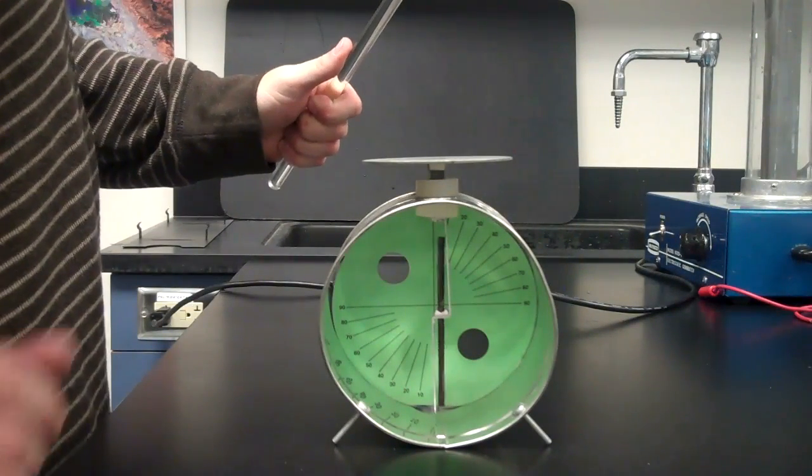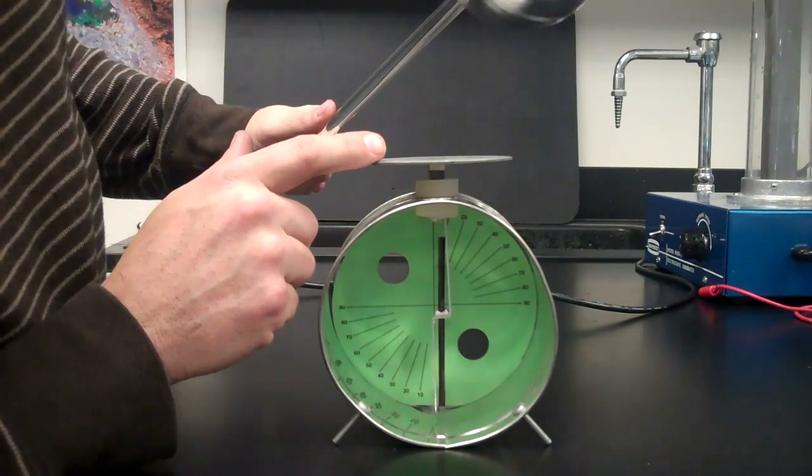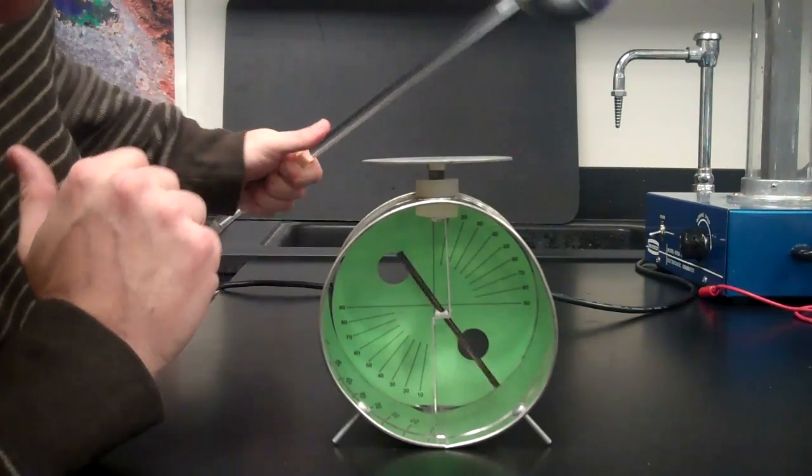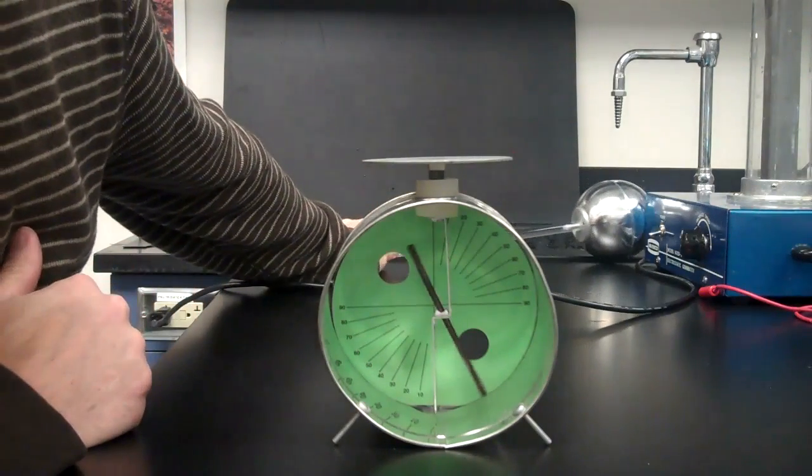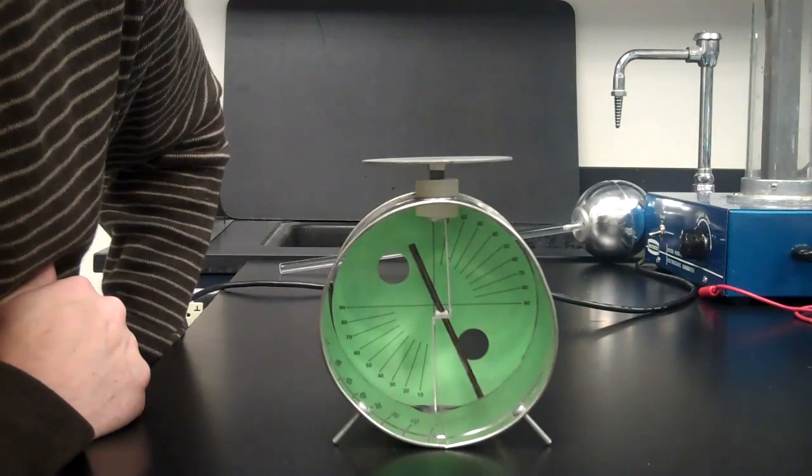Now I'm going to do it again but this time I'll put my finger on the plate of the electroscope. I'll bring the sphere in proximity of the electroscope, remove my finger and then remove the wand and you'll notice that the arm of the electroscope remains deflected.